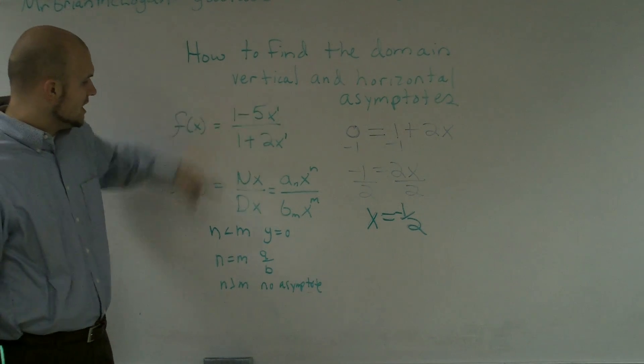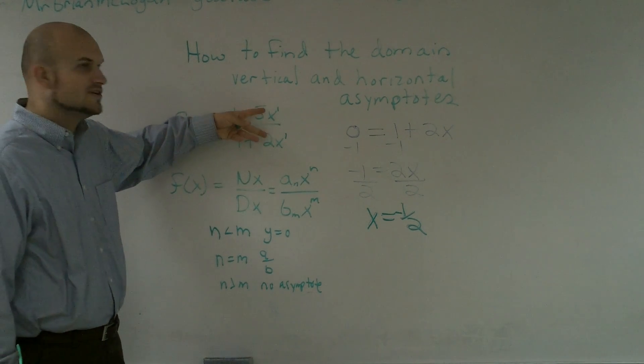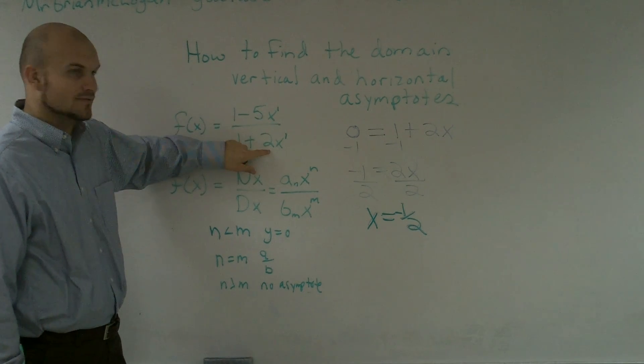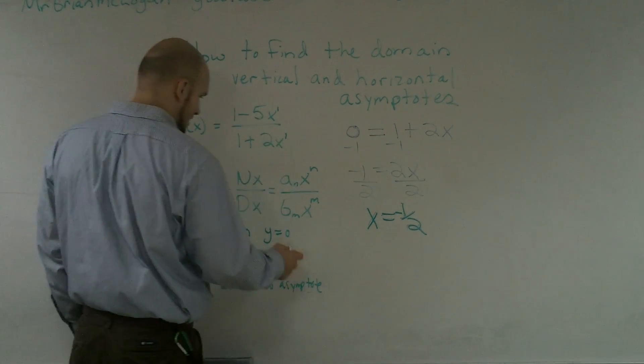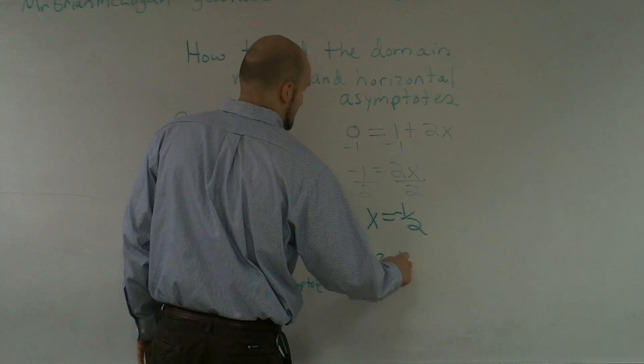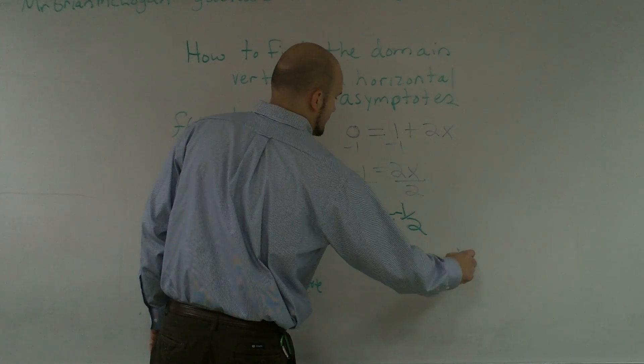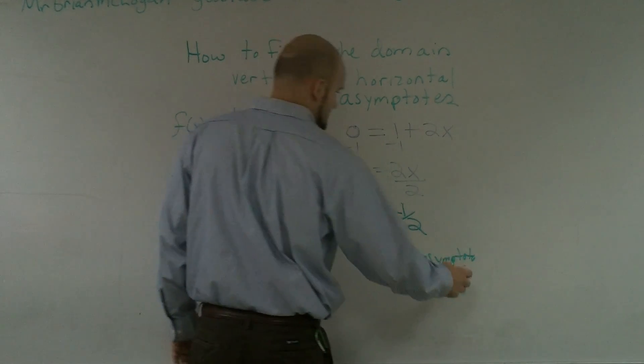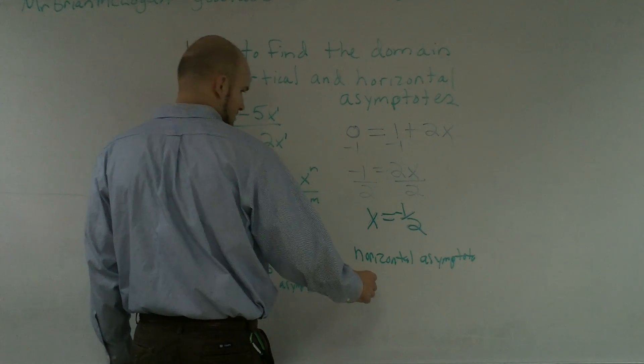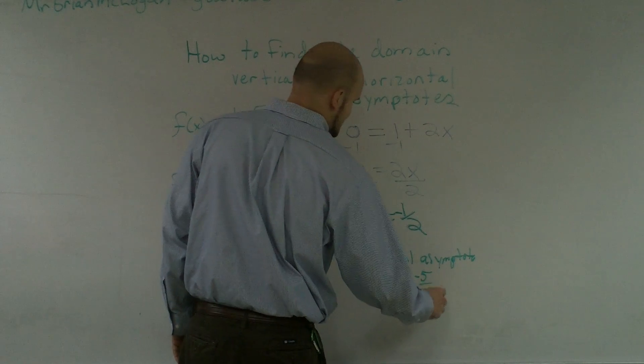My horizontal asymptote is going to be negative 5 over 2, because that is my coefficient of this polynomial over this coefficient. So my horizontal asymptote is y equals negative 5/2.